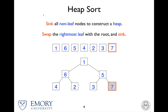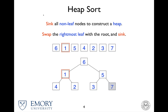The root node, which is 1 in this case, now has to be sunk to satisfy the heap properties. Compared with 6 and 5, 6 is the maximum, so we do the swap. Then 1 is again compared to 4 and 2 — 4 is the maximum, so do the swap. Sinking is done.